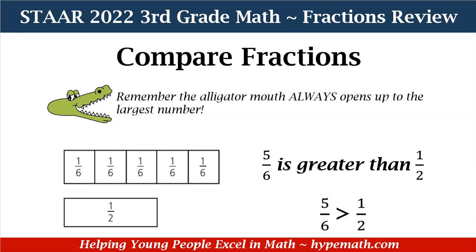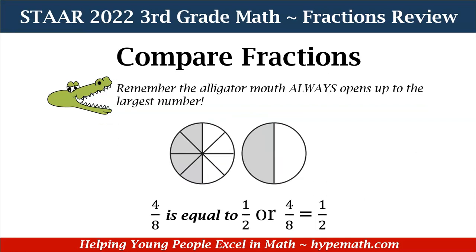And where does that alligator mouth open up? Yes, to the 5 sixths. Here is another example. We have 4 eighths is equal to 1 half. We have a different numerator and denominator, but let's look at our pictures. On the left-hand side, we have a circle that is divided into 8 equal parts. Of those parts, 4 are shaded. That is where I get 4 eighths because the total parts is my denominator, 8, and my numerator is the shaded parts, 4.